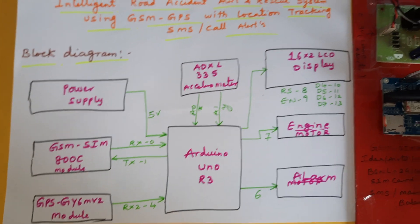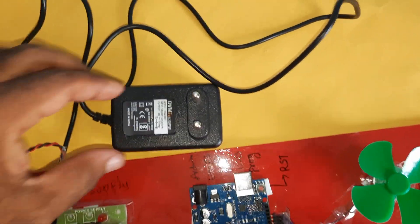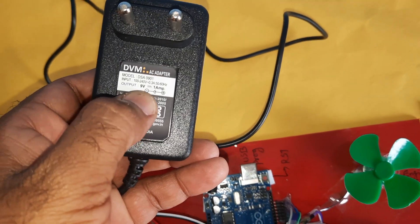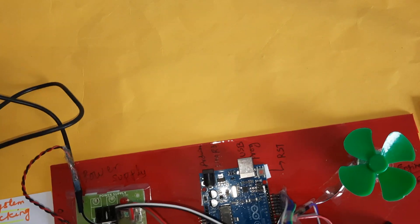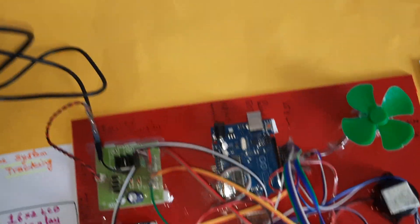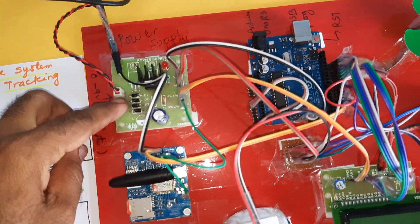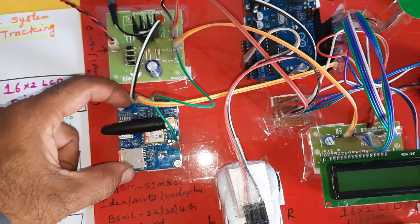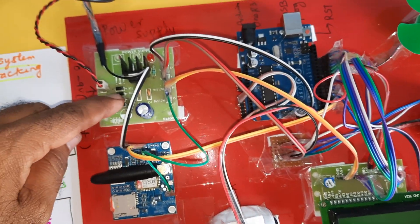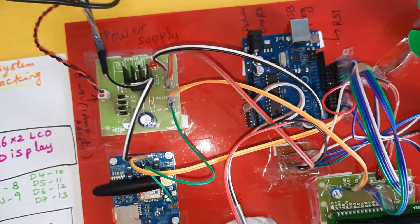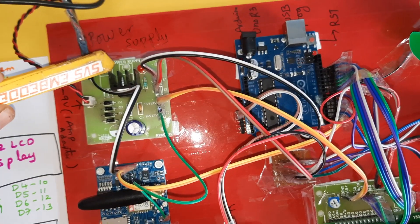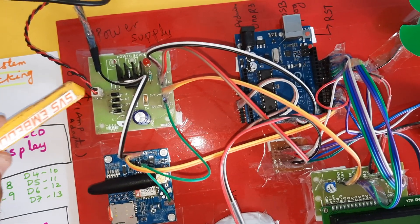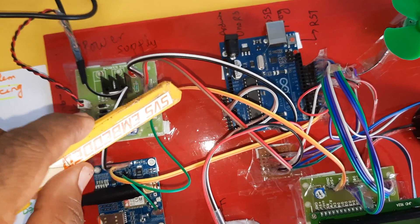The engine is connected to pin 7 and the alarm to pin 6. That completes the total block diagram of the project. Now coming to the hardware part — we are using a 9 volt adapter as the power source, which goes to the power supply board as well as the GSM module.